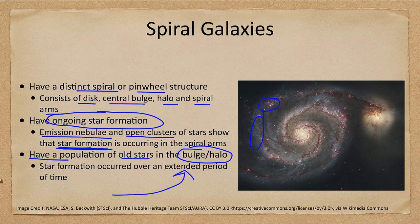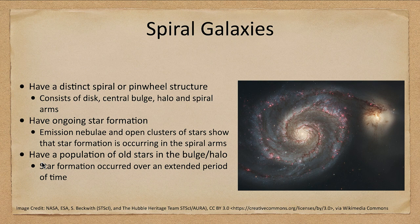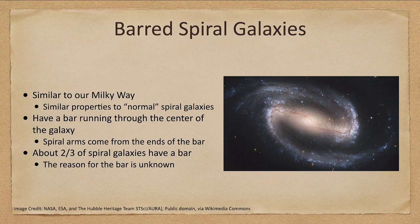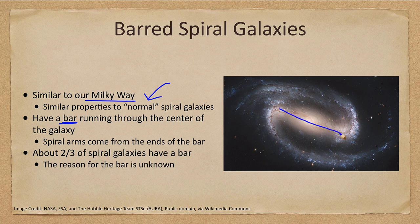These galaxies formed stars long ago and are still forming stars today. Barred spiral galaxies — which is what our Milky Way is — have similar properties to normal spiral galaxies, with the difference being a bar of stars running through the center. Instead of the spiral arms going straight to the center, the arms seem to pick up off the end of that bar.